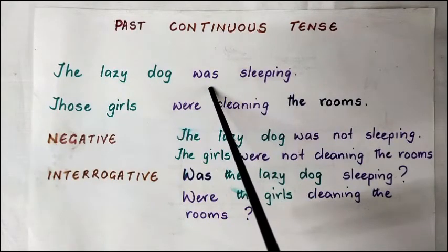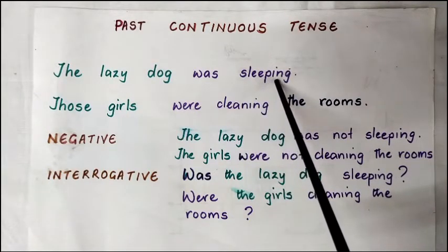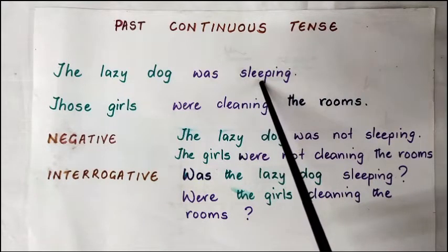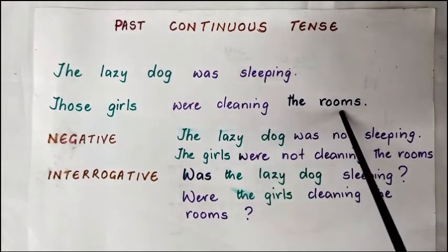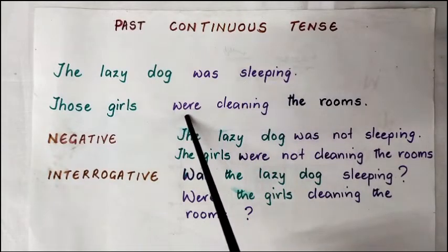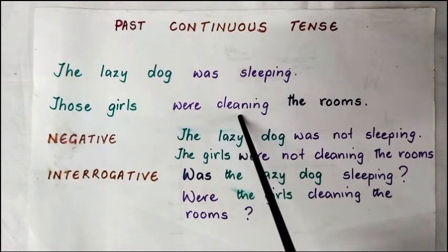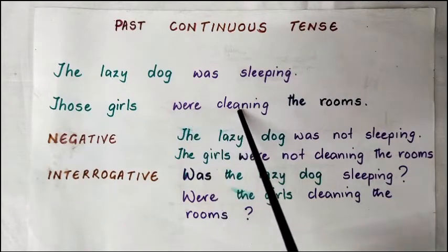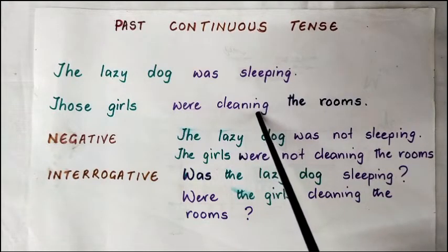Auxiliary verb, helping verb, principal verb. We always add an -ing to our principal verb to make it into the past continuous tense. Next example: those girls were cleaning the rooms. 'Were cleaning' is the past continuous tense — auxiliary or helping verb, and principal or main verb. Again, an -ing in the main verb.